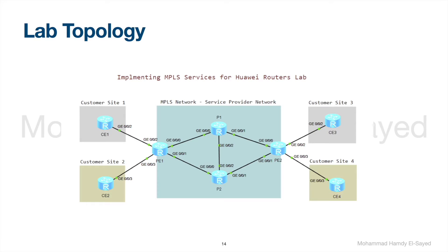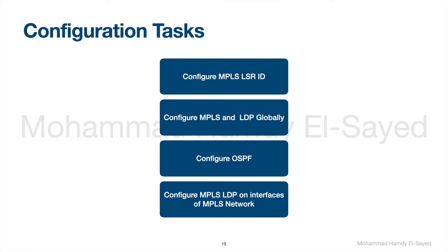We have four routers in the MPLS network to be configured in this lab: PE1, PE2, P1, and P2. We have four configuration tasks to be finished in this lab: one, configure MPLS LSR ID; two, configure MPLS and LDP globally; three, configure OSPF; four, configure MPLS LDP on interfaces of the MPLS network.